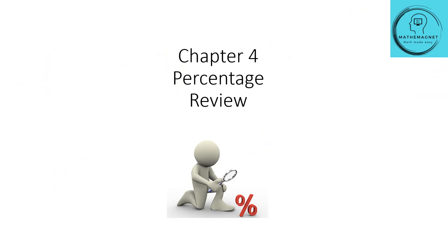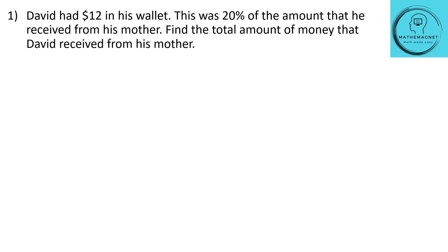Let's look at chapter 4 percentage review questions. Let's look at the first question. David had $12 in his wallet. This was 20% of the amount that he received from his mother. Find the total amount of money that David received from his mother.